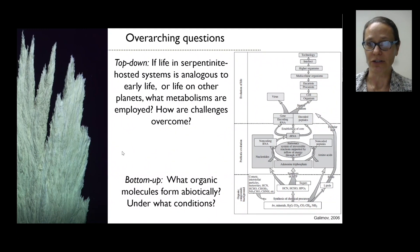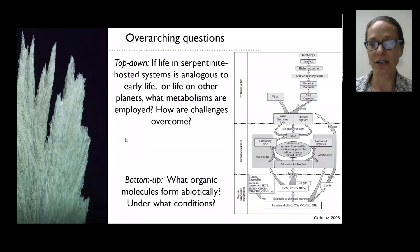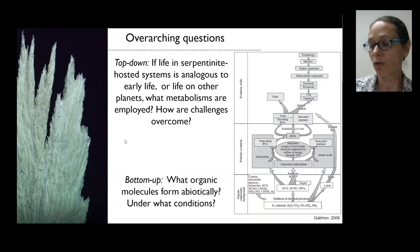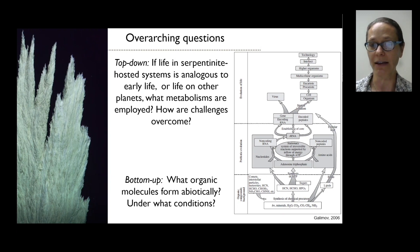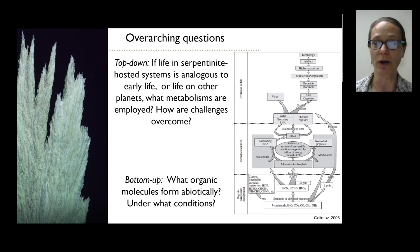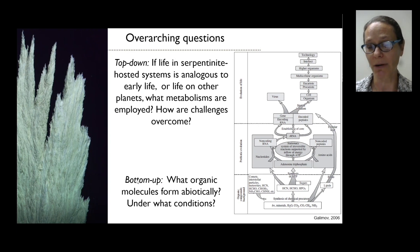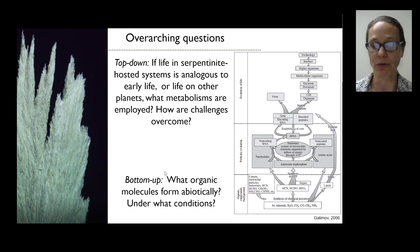One of the locations proposed for this happening is in ultramafic environments, where hot reduced alkaline fluids can drive abiotic organic synthesis of some organic molecules in the absence of life, potentially starting the path towards early life on Earth. My overarching research questions are: if life started in serpentinite-hosted systems analogous to early life, what metabolisms thrive in these environments, and from the bottom-up perspective, which organic molecules form abiotically and under what conditions?